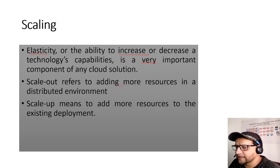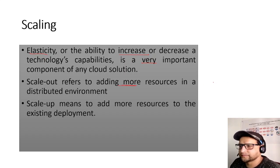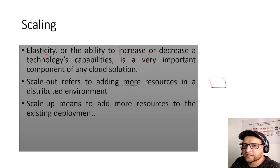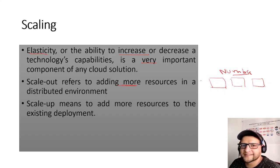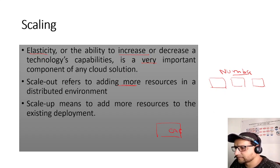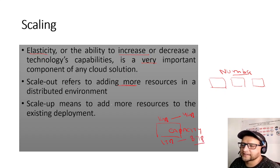Scale out means adding more resources in a distributed environment — increasing the number of servers. Scale in is reducing the number of servers. Scale up means increasing the capacity of an existing resource — for example, going from 1 GB RAM to 4 GB RAM, or from 1 TB to 8 TB hard disk. Scale down means reducing that capacity.